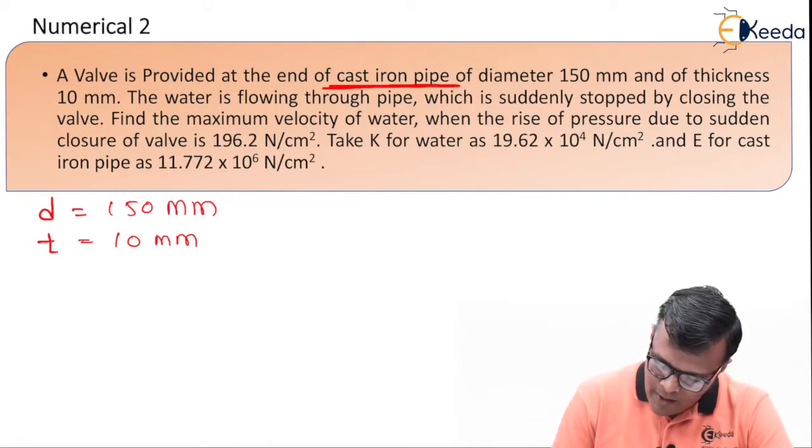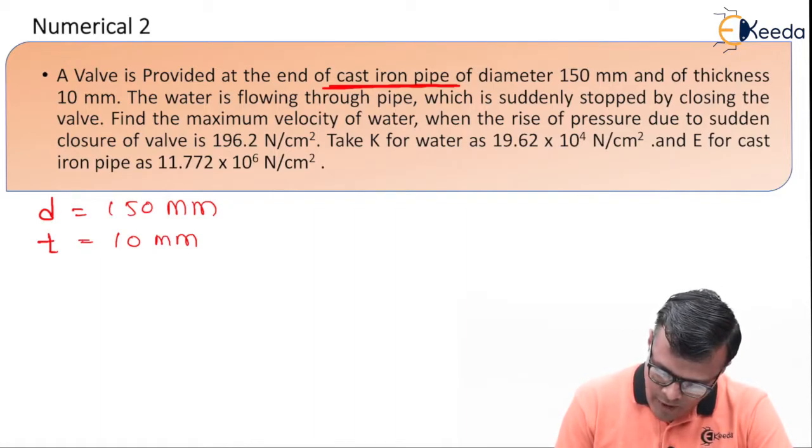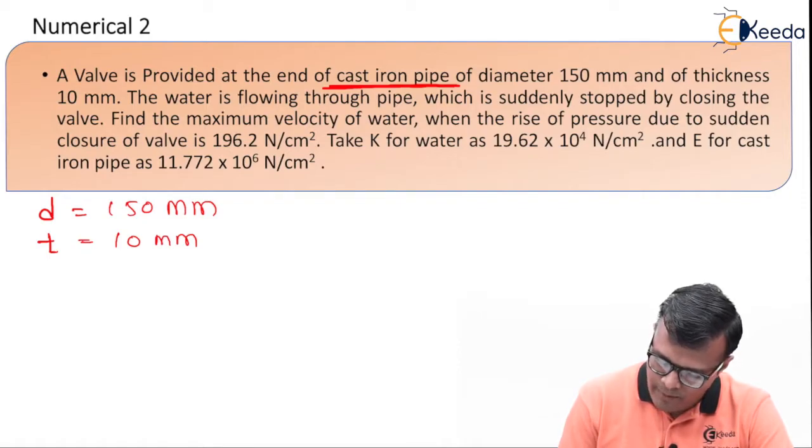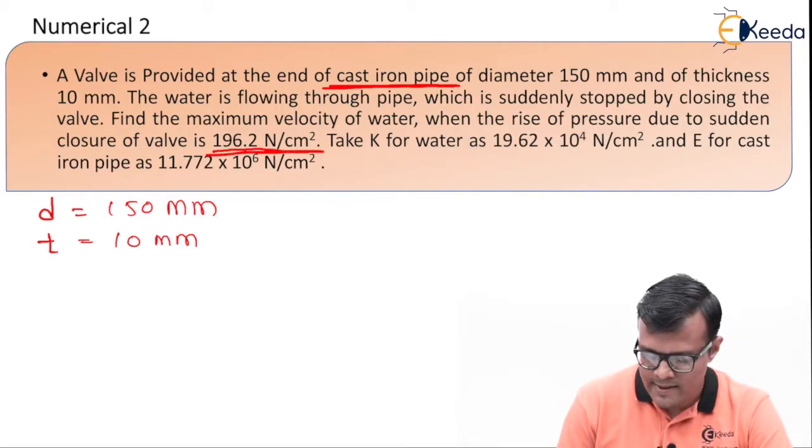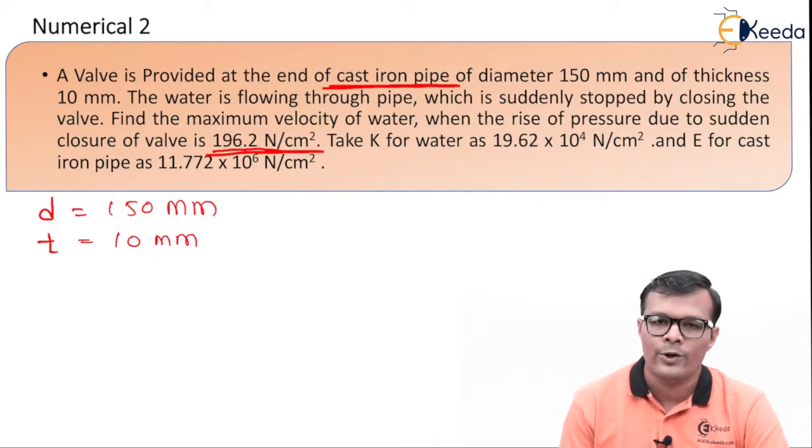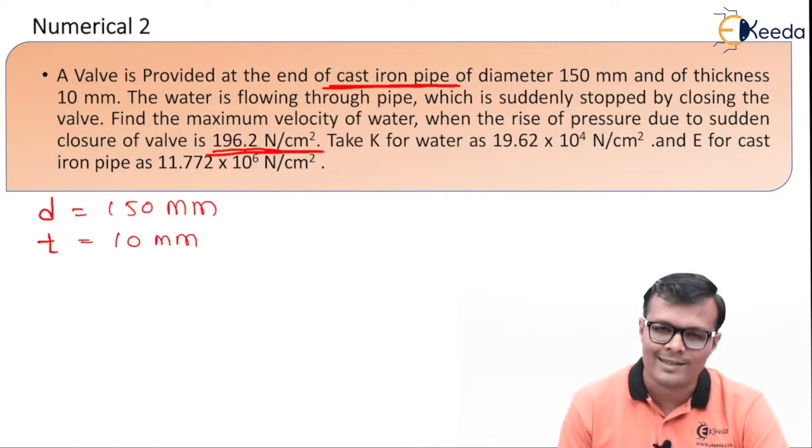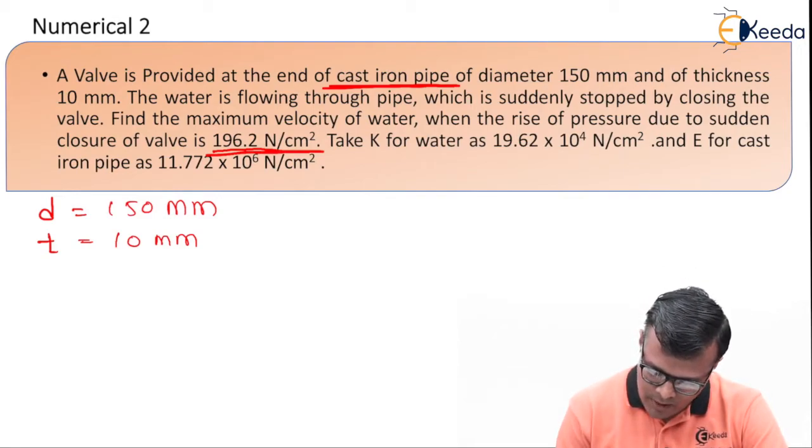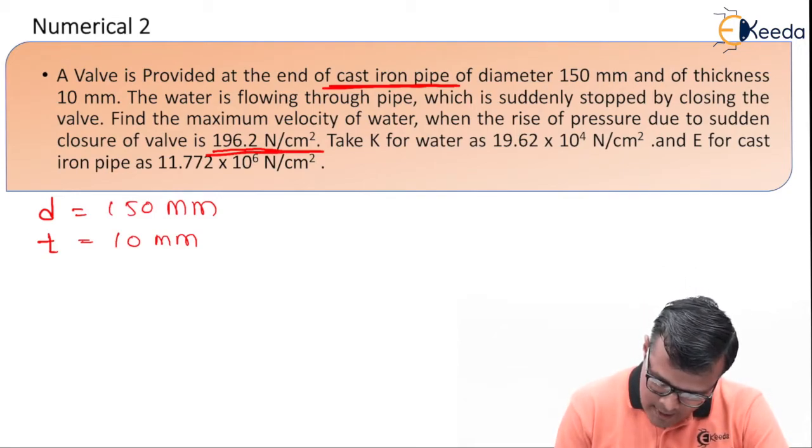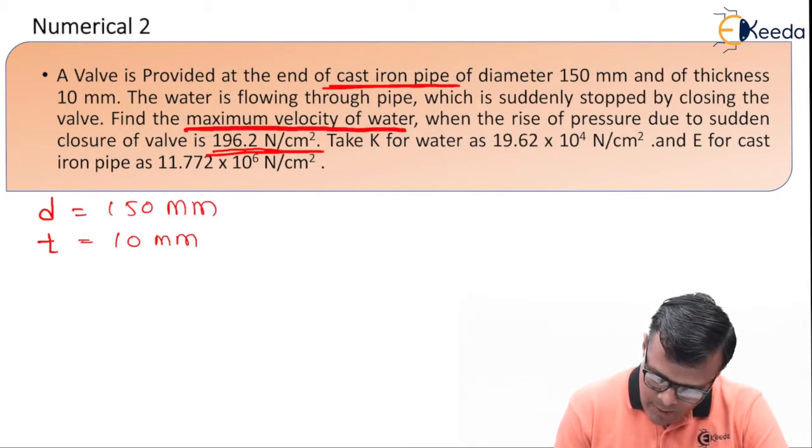Water is flowing through pipe which is suddenly stopped by closing a valve. Yes, we know that already. Find the maximum velocity of water when rise of pressure due to sudden closure of valve is this one. This pressure is given to us in the unit Newton per centimeter square, and it is already given to us. So we do not have to calculate the pressure, but they are asking us to find maximum velocity.